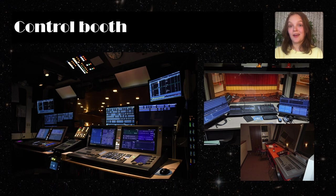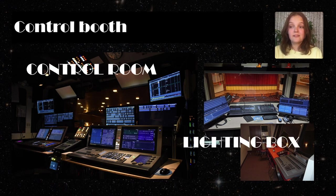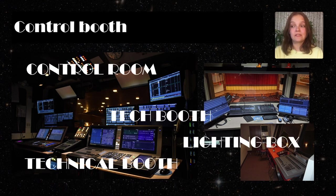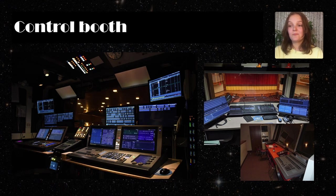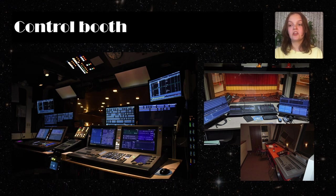The control booth, also known as the control room, lighting box, technical booth, tech booth, or simply booth, is the space where technical equipment, lighting controls, and the soundboard are operated. This booth is often an enclosed room with a big sliding window in the front and a good view of the stage. It's usually located in the rear of the house, but it can also be found on the ground floor or at the balcony level.